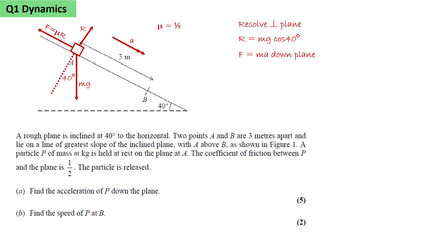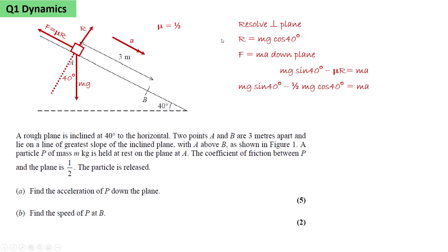We apply F equals mA down the plane. The resultant force down the plane will be mg sin 40 — that's the component of the weight acting down the plane — minus mu R, the frictional force. That will accelerate the mass m at an acceleration of A. We know mu is a half and we know R is mg cos 40, so we substitute these into the equation.